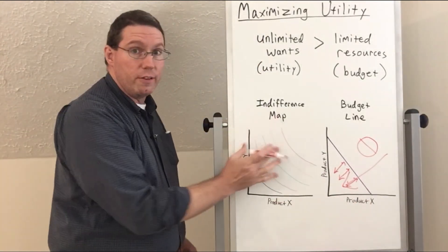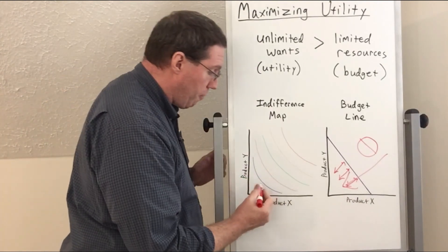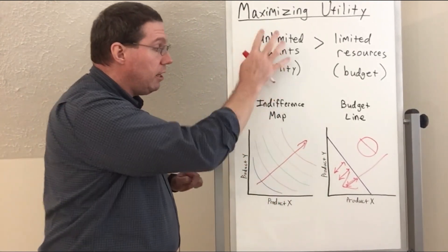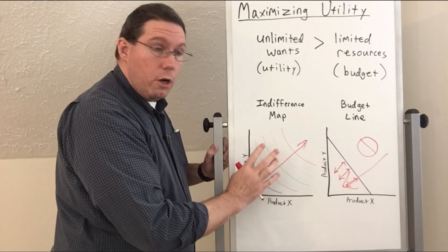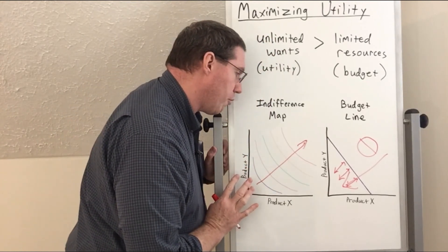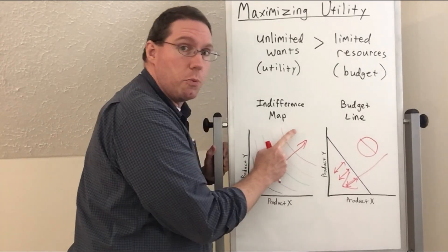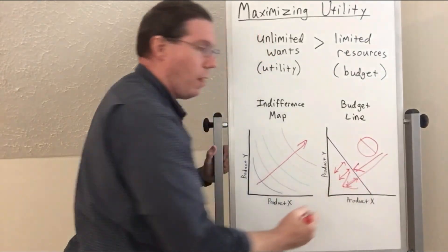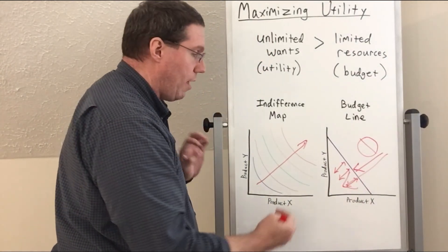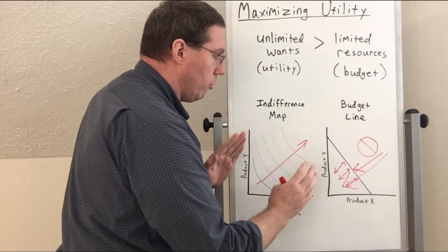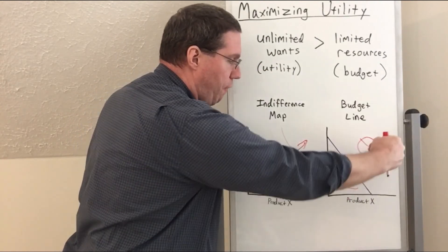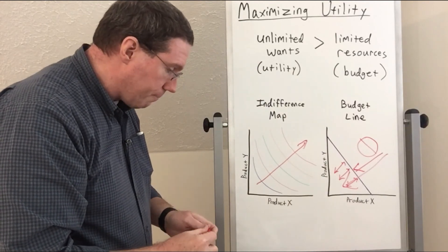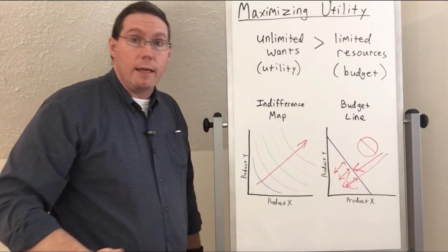On our indifference map, we want to move outward — our unlimited wants make us want to go further out. So our unlimited wants are pushing us outward on the graph, and our budget is pushing us back inward. We have this struggle between wanting to be out here but being forced to stay in here. This is a natural thing for human beings — in any decision-making circumstance, we always want more but are always constrained to a certain limit.